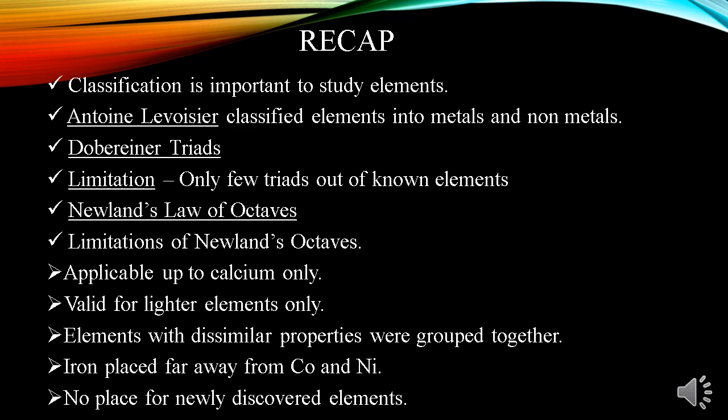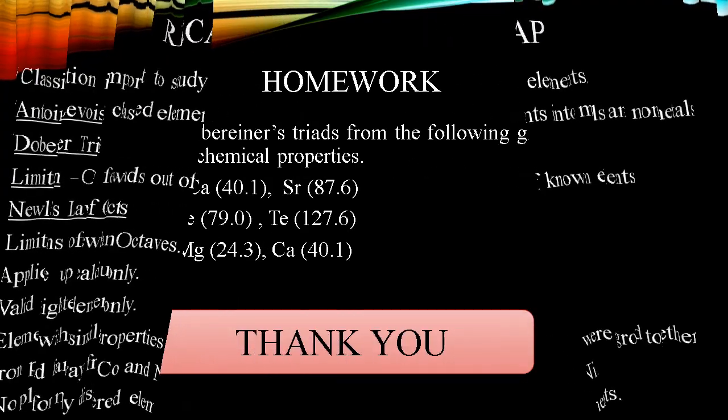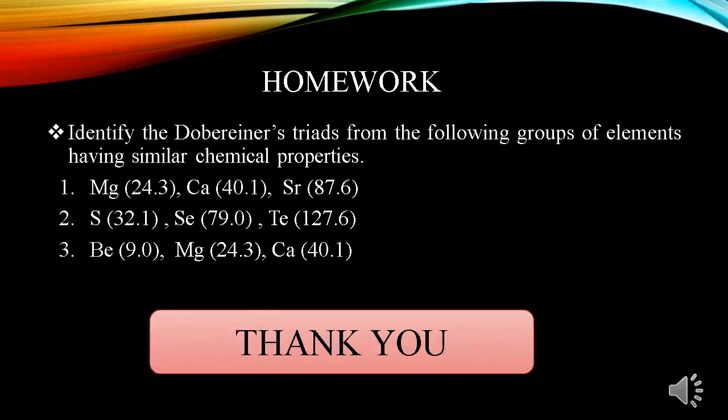So children, I hope you have understood what we have studied today. We will learn more about periodic classification of elements in detail in the next module. This is the homework for today's topic. You have to identify the Dobereiner's triad from the following groups of elements having similar chemical properties. You have to solve these examples in your notebook. We will study about periodic table in detail in the next module. Till then, take care of yourself and enjoy online learning. Thank you very much.